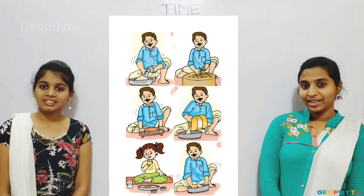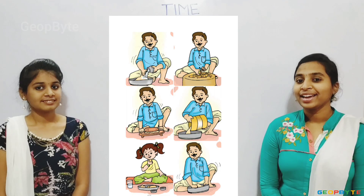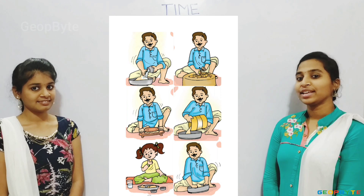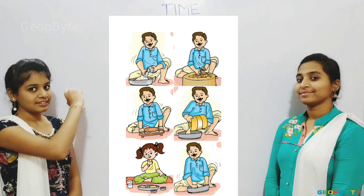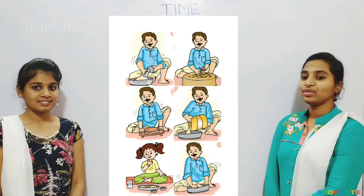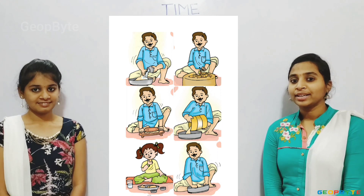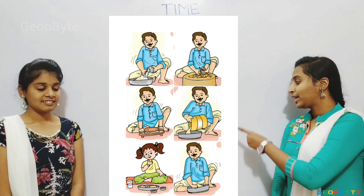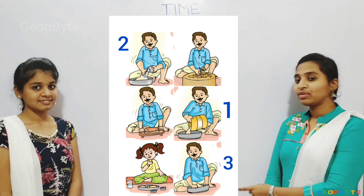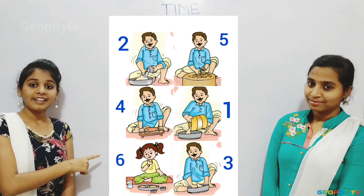Now let us get into the topic: arrange the activities in a sequence. Hey kids, see here — there are a few activities arranged randomly. Let's see them: pouring the water in the flour, roasting the chapati, rolling the chapati, taking the wheat flour, eating the chapati, and mixing the water with wheat flour. Now let us arrange them in sequence: taking the wheat flour, pouring the water in the wheat flour, mixing the water and wheat flour, rolling the wheat dough, roasting the chapati, and finally eating the chapati.